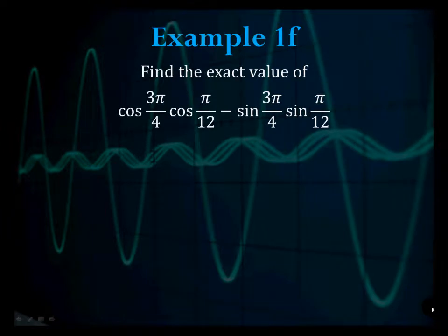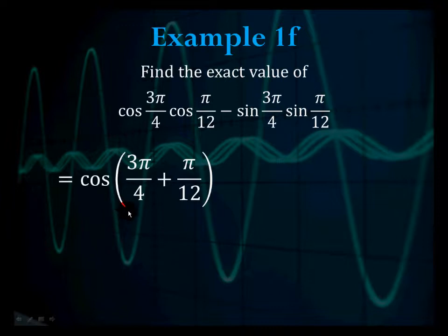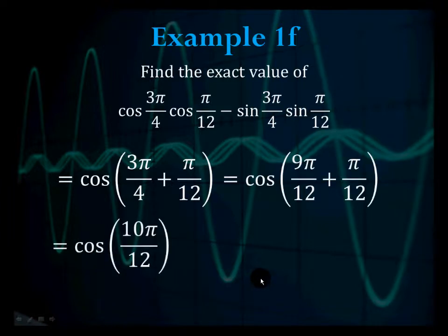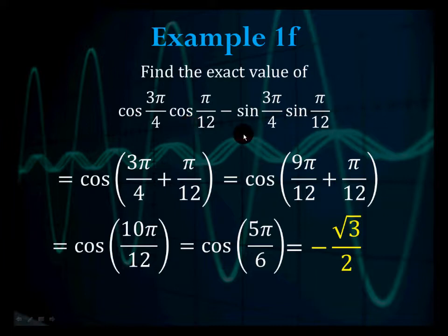Example 1f: find the exact value of cosine(3π/4) cosine(π/12) minus sine(3π/4) sine(π/12). The pattern cosine a cosine b minus sine a sine b matches the cosine addition formula, so this equals cosine of 3π/4 plus π/12. Adding the fractions gives cosine of 10π/12, which simplifies to cosine of 5π/6 — that's 150 degrees, with a reference angle of 30 in the second quadrant, giving negative √3/2.